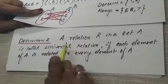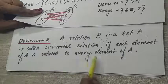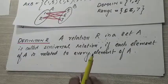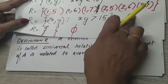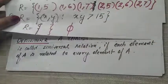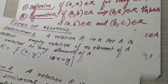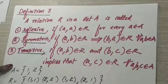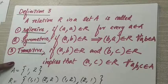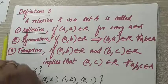The next definition: a relation R in a set A is called a universal relation if each element of A is related to every element of A. That was shown in the earlier example where all elements were present in the Cartesian product. Now moving to the next topic — equivalence relation. If a relation satisfies reflexive, symmetric, and transitive conditions, then we say it is an equivalence relation.